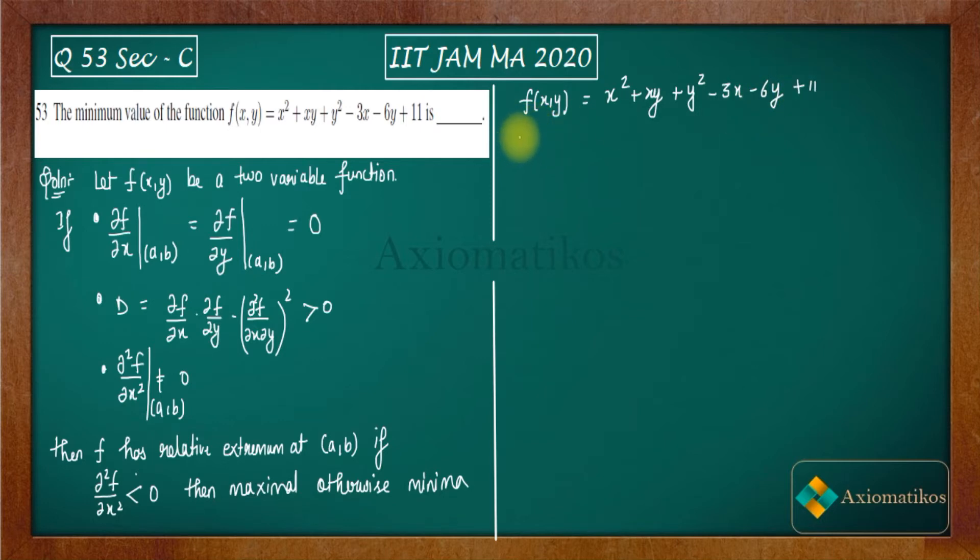So f(x,y) is given by x² + xy + y² - 3x - 6y + 11. Let us calculate ∂f/∂x. So ∂f/∂x is 2x + y - 3. What is ∂f/∂y?